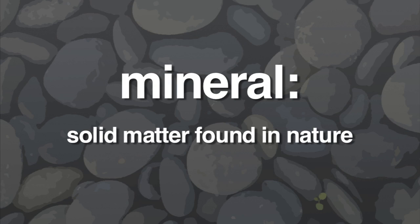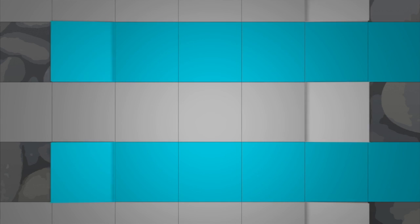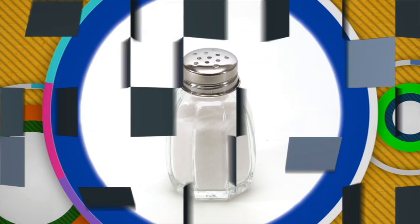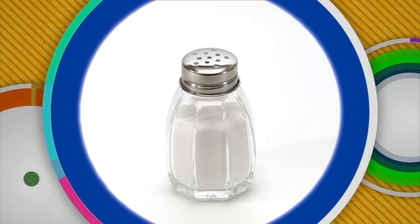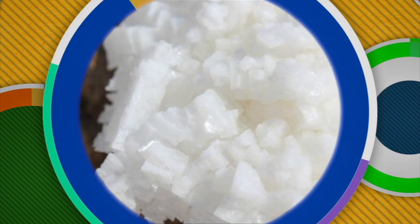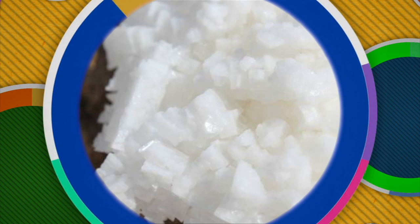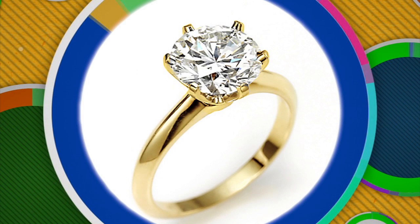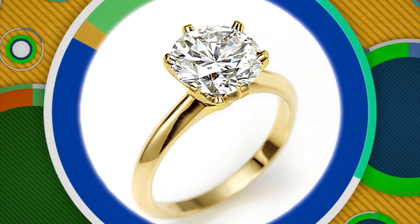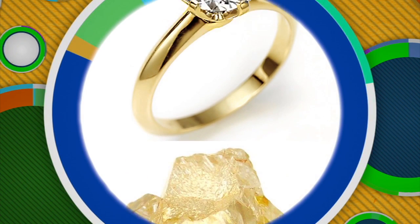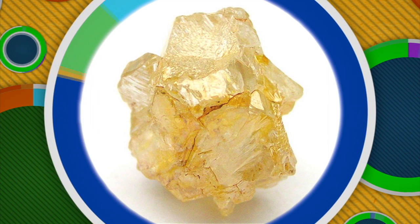Minerals are solid matter found in nature. Some minerals you may already know about. For example, salt is a mineral — in nature, salt looks like this. A diamond used to make jewelry is a mineral; this is what a diamond looks like in nature.